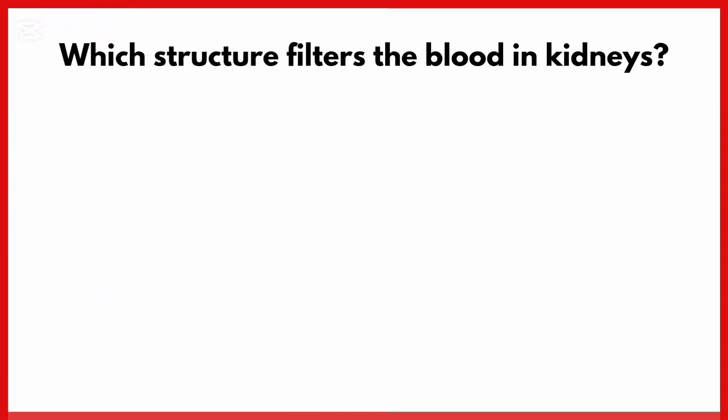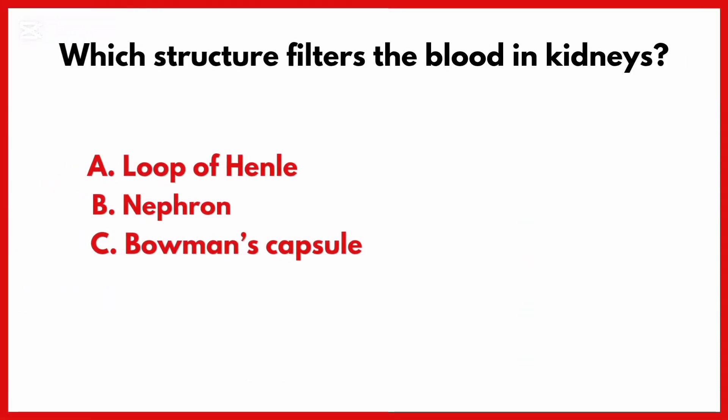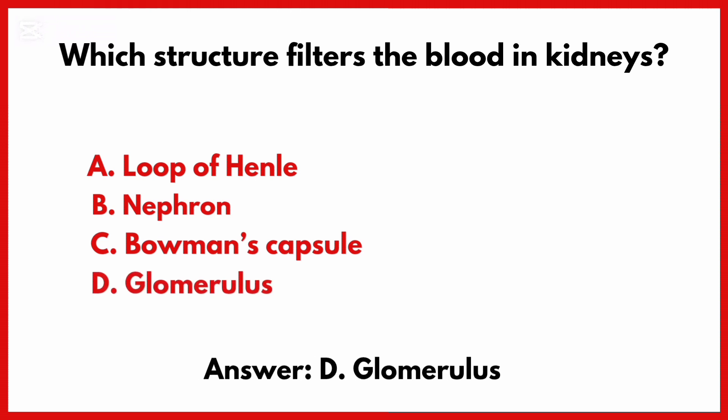Which structure filters the blood in kidneys? Correct answer is option D: Glomerulus.